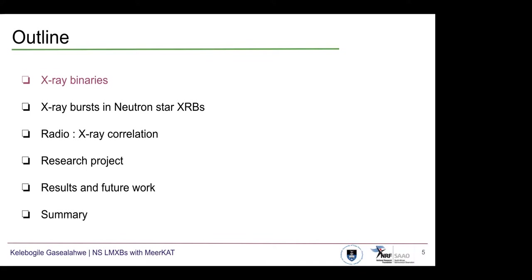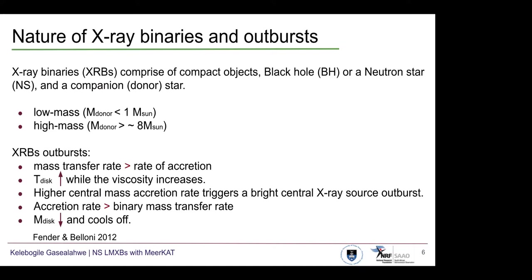X-ray binaries comprise of a compact object primary, which can be a black hole or a neutron star, and a companion which is your donor star. Depending on the size of the donor, the XRB can be classified as either low mass or high mass. When an X-ray binary undergoes an outburst, the mass transfer rate surpasses the accretion rate onto the primary component. The temperature of the disk rises as the viscosity increases, and then the higher central mass accretion rate triggers a bright central X-ray source — and that is the outburst.